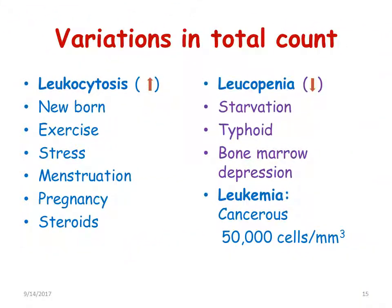Looking at variations in the total count: when the white blood cell count increases above the normal range it is called leukocytosis, and when it decreases below normal it is called leukopenia or leukocytopenia. Examples of leukocytosis include newborns, exercise, stress, menstruation, pregnancy, and steroids. Examples of leukopenia include starvation, typhoid, bone marrow depression, leukemia, and cancerous conditions. A separate condition exists where the cell count goes above 50,000 cells per millimeter cube of blood.